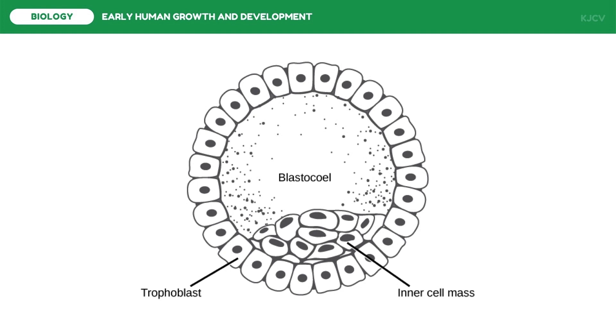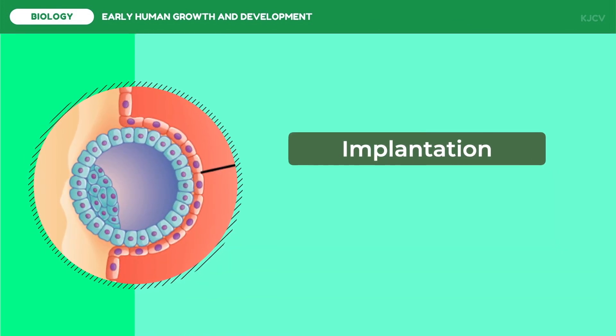After this stage, the blastocyst continues down the reproductive tract until it reaches the uterus for implantation. Implantation is the process in which the blastocyst makes contact with the uterine wall and remains attached until birth. The endometrium prepares for the developing blastocyst via many internal changes. This process is very critical — if problems occur, it may lead to miscarriage.